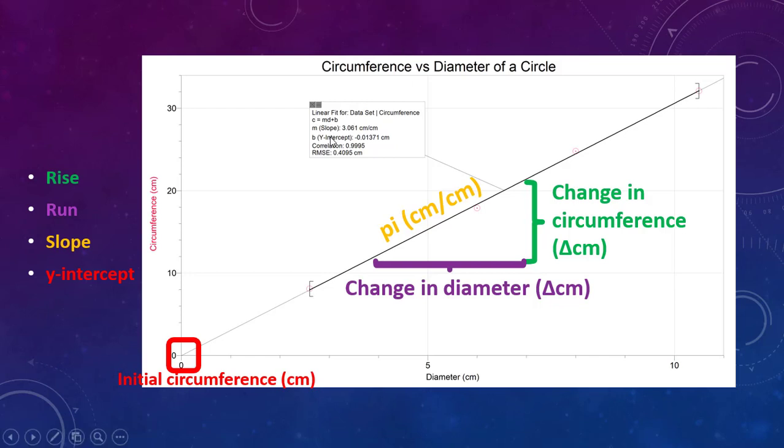We'll come back to this number. So if you look on our logger pro thing right here, we do have a small number. And we'll come back to that here in a little bit and talk about that a little bit more. But it makes sense, doesn't it? If you have zero centimeters as your diameter, you should have zero centimeters as your circumference. Because if you don't have a diameter, you don't have a circle.